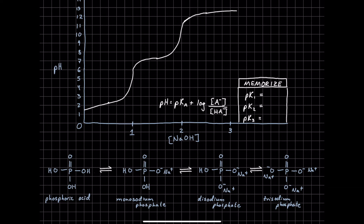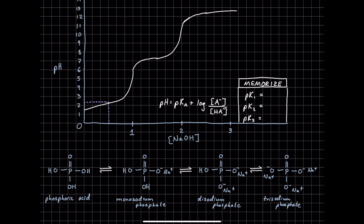As we keep continuing forward, we eventually reach what we call our first half-equivalence point. We will be at a specific pH — it will be at a pH of 2.2, which matches up to the first pKa for phosphoric acid. So the pKa of this acidic part of the phosphoric acid is going to be 2.2.